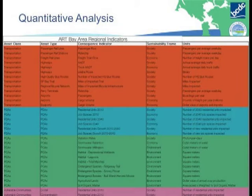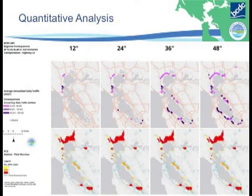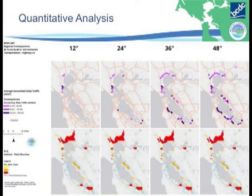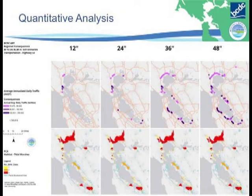Here is a sneak peek of our output: over different water levels you can see the consequences. The top row shows highways and daily drivers. Even during a high tide event today, the North Bay and San Rafael area is already affected — we need to do something immediately. For habitat, tidal marshes are immediately impacted and are the first to get hit; we need to include them as part of the solutions.